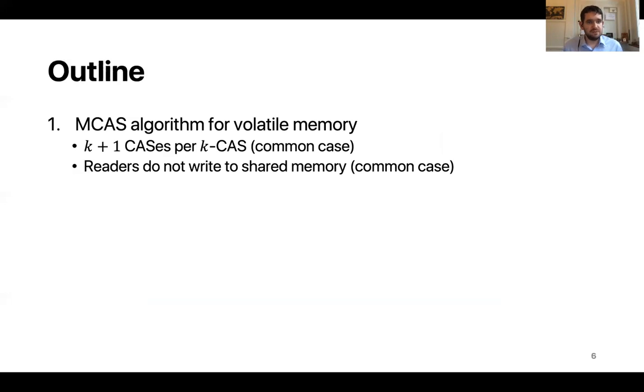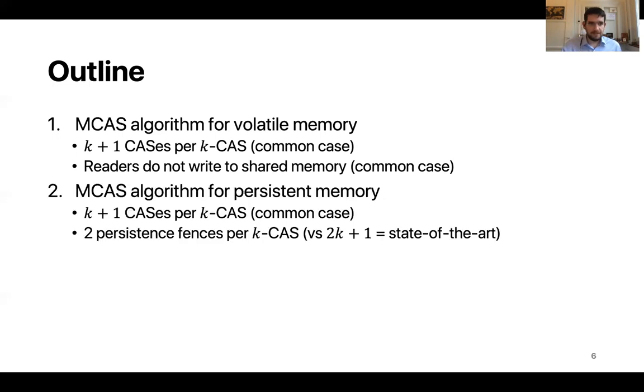Our first contribution is an MCAS algorithm for volatile memory which is very efficient. Our algorithm uses only k plus 1 CASs for a k word MCAS in the common uncontended case. Our algorithm has the additional desirable property that readers do not write to shared memory when there is no contention.